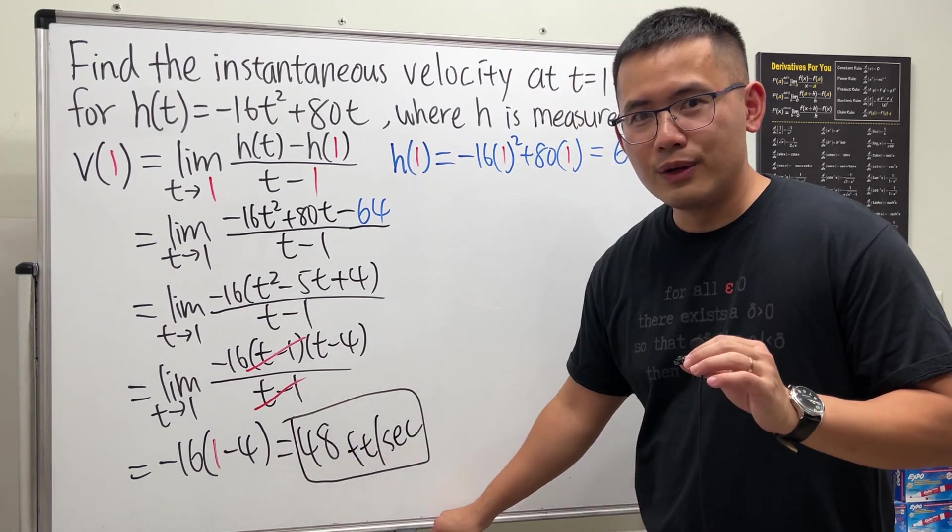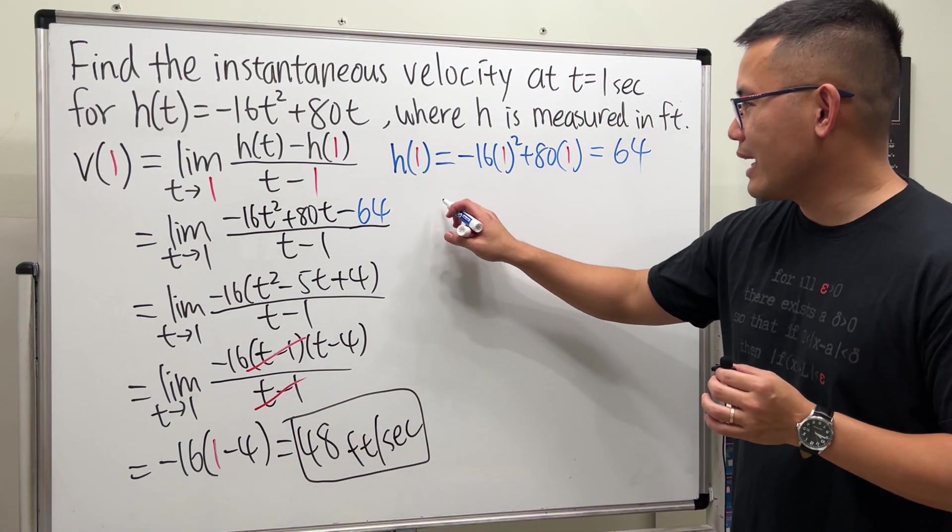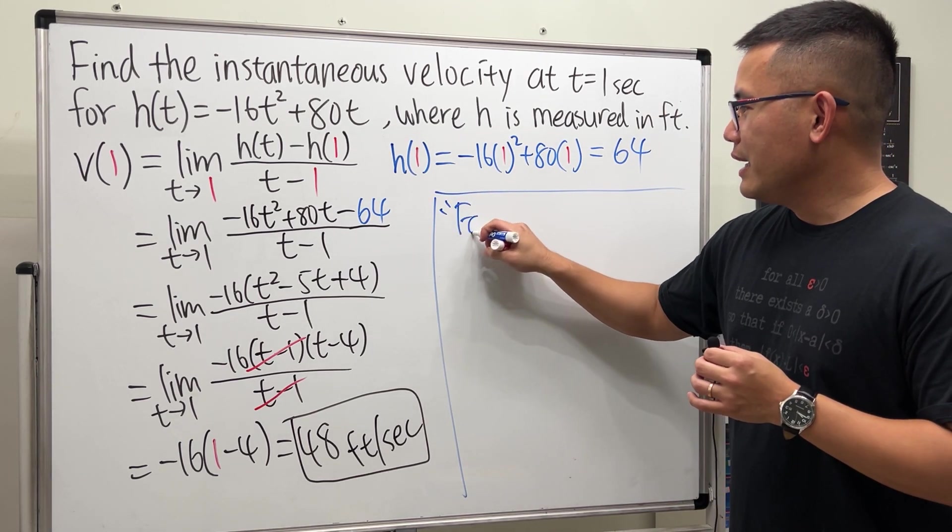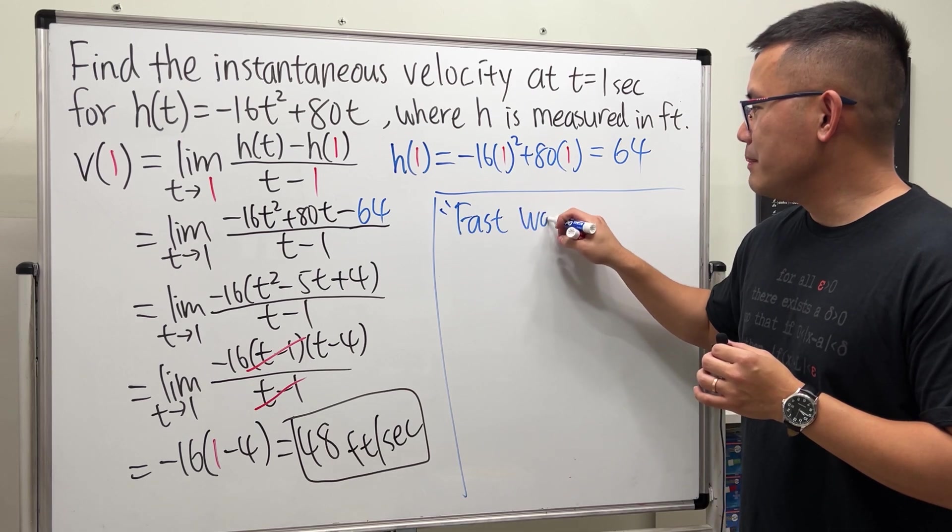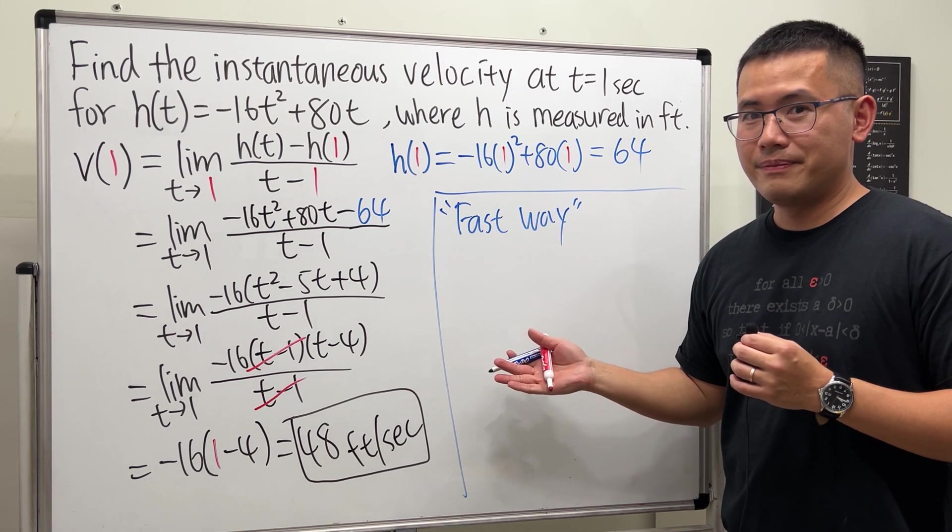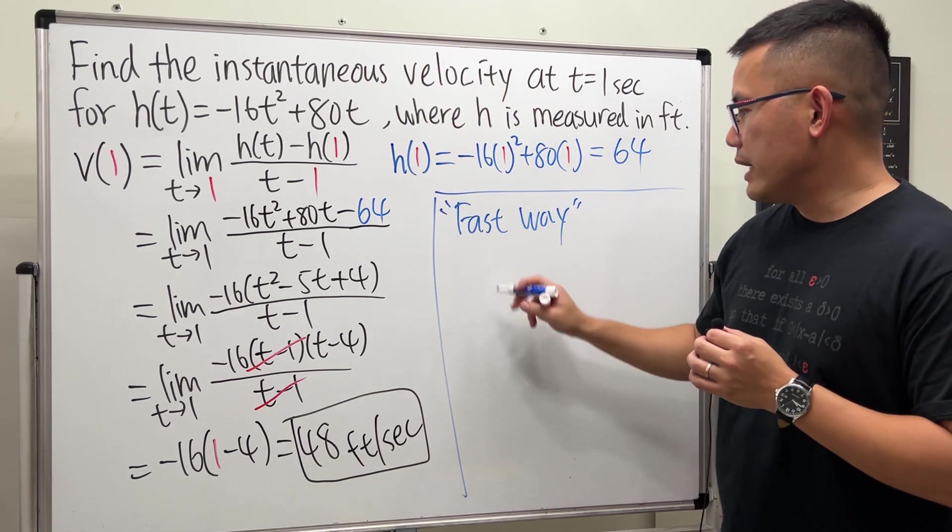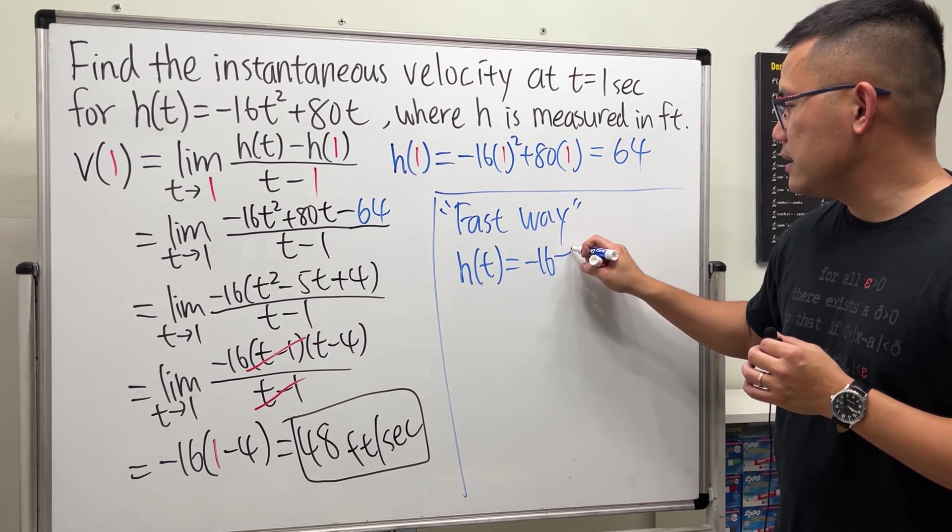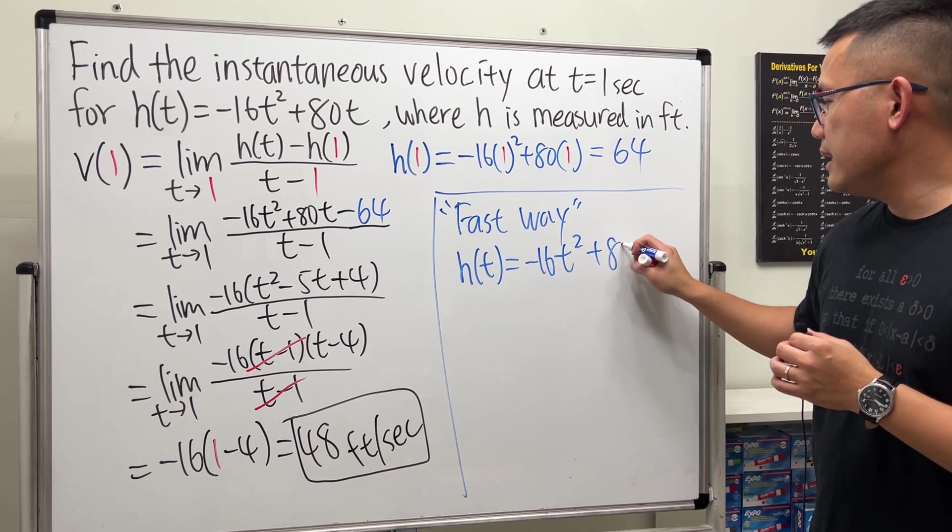I know. I know. This is a fast way. So let me show you that right here as well. This is the fast way. If you have done the power rule, then you can go ahead and use this. So let's go ahead and write this down again. H of t is negative 16t squared plus 80t.